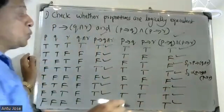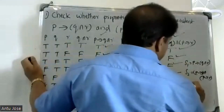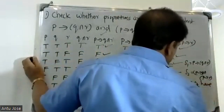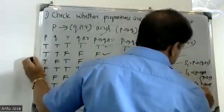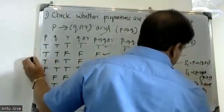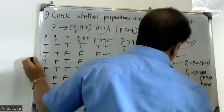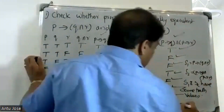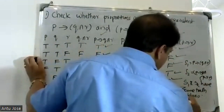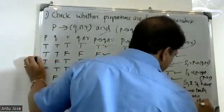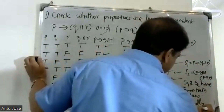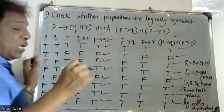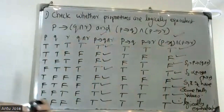S1 and S2 have the same truth values. Therefore, these two propositions are logically equivalent.